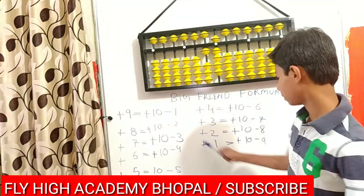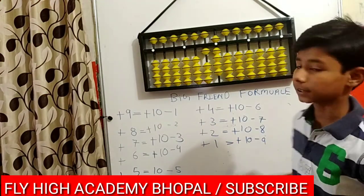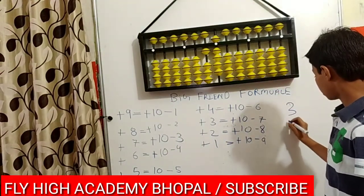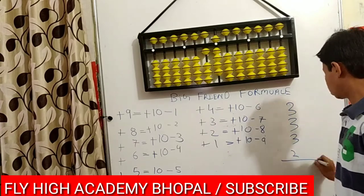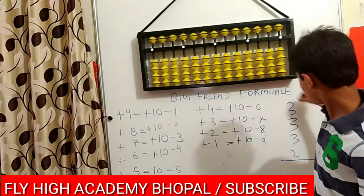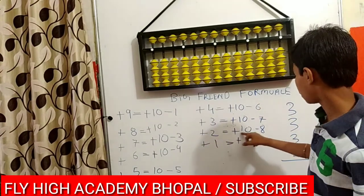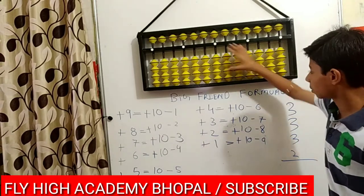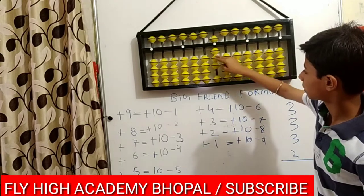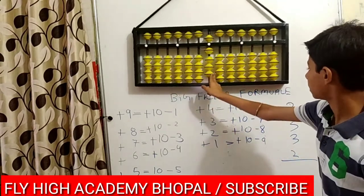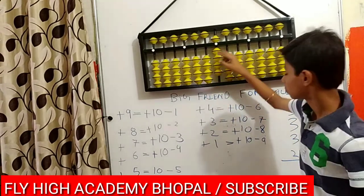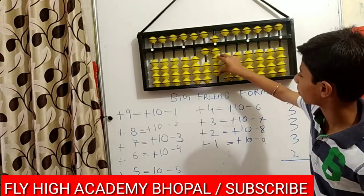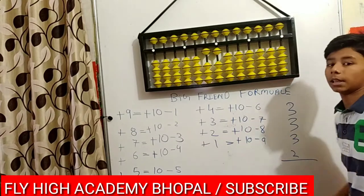Moving to the second-last formula: plus 2 equals to plus 10 minus 8. The question is 3, 3, 3, and plus 2. So the formula of plus 2 equals to plus 10 minus 8. The question is 3 plus 3 plus 3, and then plus 2, so 2 equals to plus 10 minus 8: plus 10 here and minus 8 from here. The answer is 11 for this question.